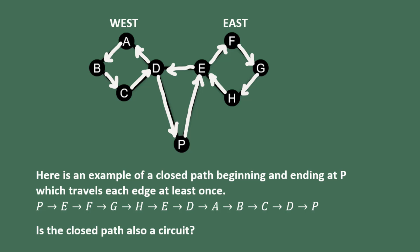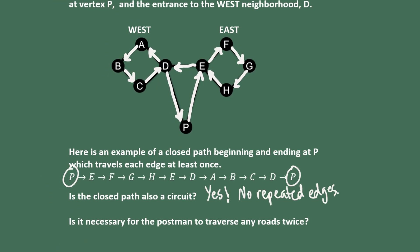So would you say that this closed path is also a circuit? If you said yes, you're correct. Why? Well, what makes it a closed path is that it begins and ends at the same vertex, so it's closed. It didn't go off of the graph, so it's a path. And what makes it a circuit is that it also has no repeated edges to traverse any roads twice. So that's our optimal solution. They're going to use the least amount of gas and time this way.